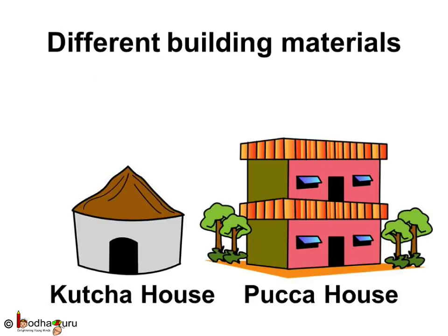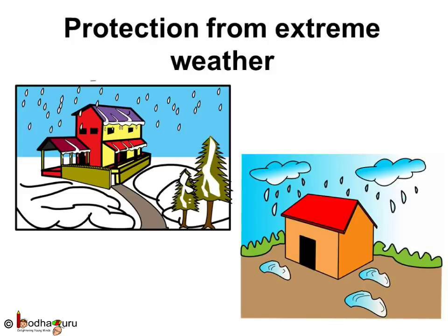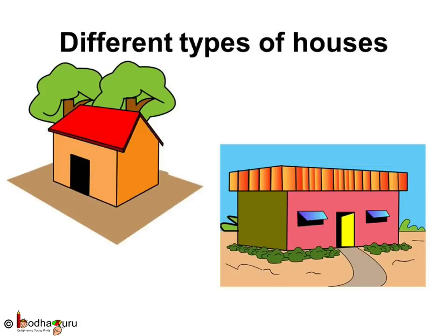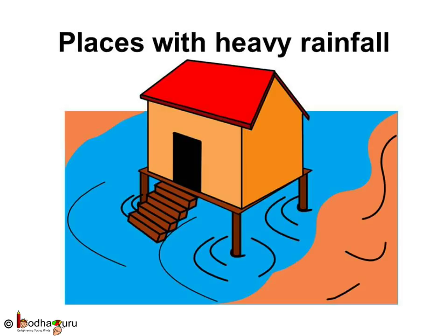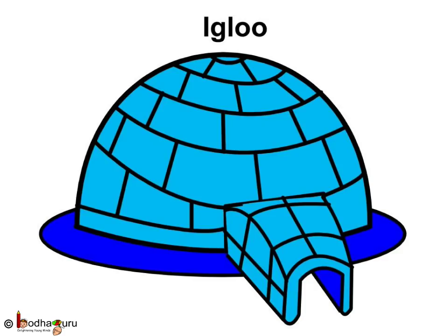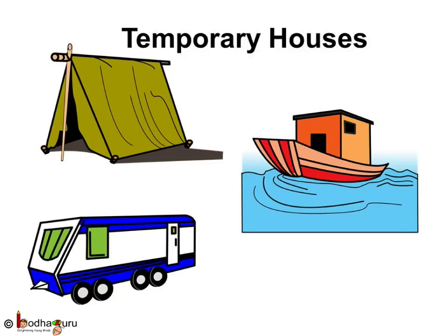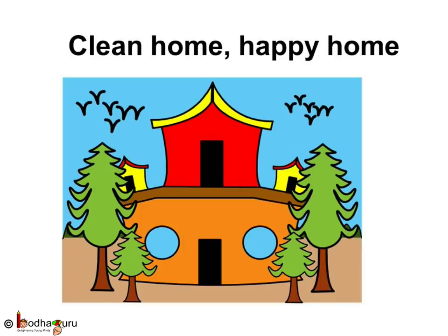To sum up, houses are made of different materials. Some are kaccha houses, some are pakka houses. Houses are also made according to climatic conditions of a place. Places with average rainfall can have houses with flat roofs or sloping roofs. Places with snowfall have houses with sloping roofs. In areas where there is heavy rainfall, houses are built on stilts with sloping roofs. In very cold areas, snow houses called igloos are made. People on the move prefer temporary houses — for example, houseboats in water, caravans on road, and the very lightweight tents which can be fixed easily. The houses may be of different types but all of them are used for shelter and safety.